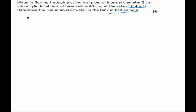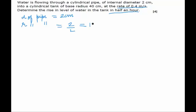First of all, the diameter of the pipe is given to be equal to 2 cm. So the radius would be half of the diameter: 2 divided by 2 equals 1 cm. But since the rate was given in meters per second, 0.4 meters per second, we would convert this into meters so that everything is in meters. So the radius is 0.01 meters.